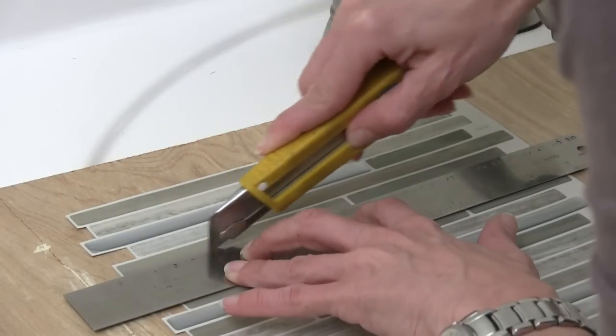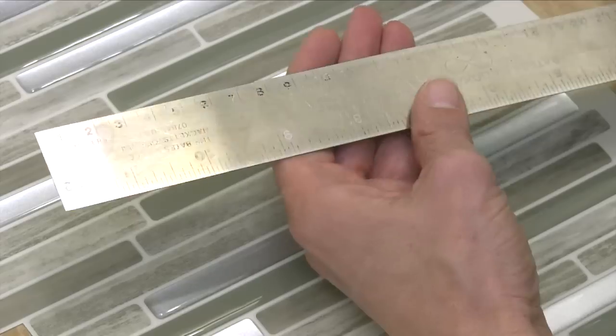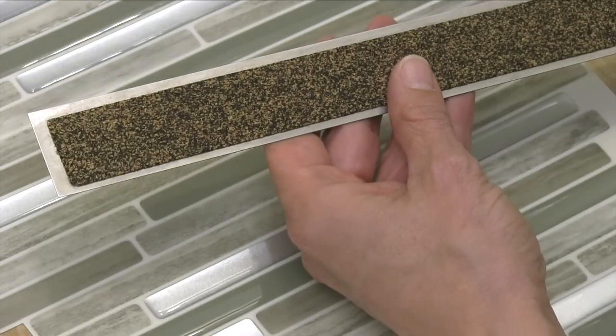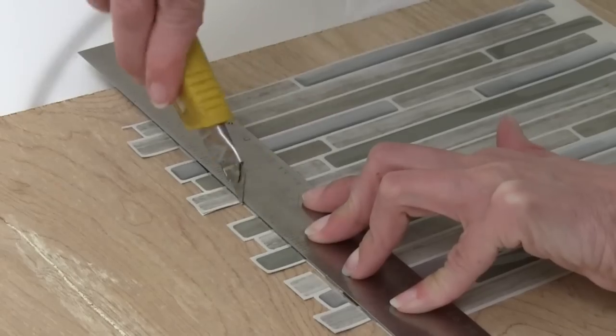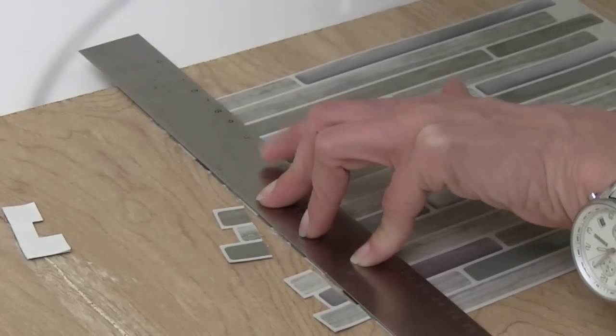I cut the tile with the help of a ruler and a utility knife. I like using a ruler with cork on the back because it prevents the ruler from sliding around while I'm cutting the tile. For the first tile, I also cut off the ends to have a straight edge.